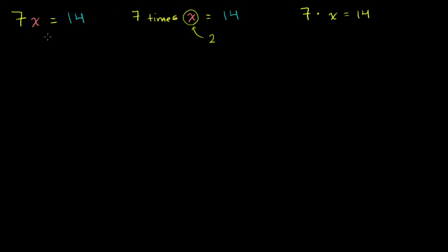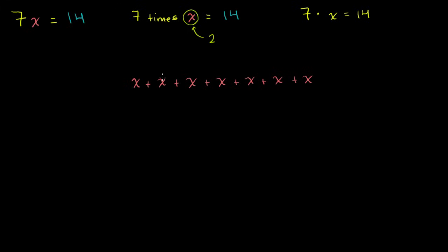To understand how you can manipulate this equation to solve it, let's visualize this. 7 times x — that's the same thing as x added to itself 7 times. That's the definition of multiplication. So it's literally x plus x plus x plus x plus x plus x plus x. That right there is literally 7x.